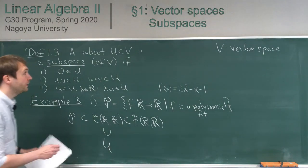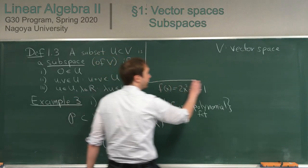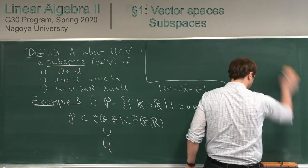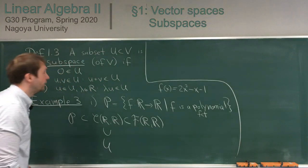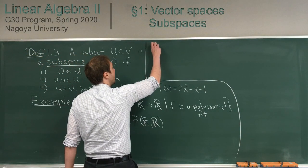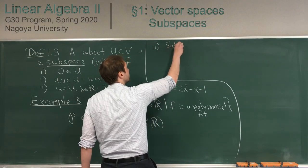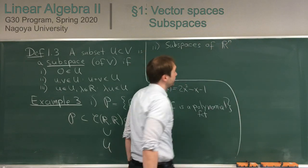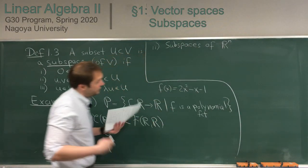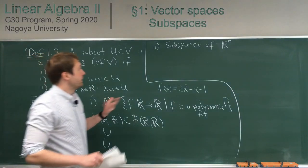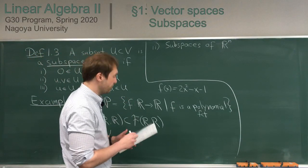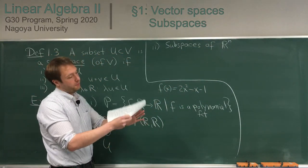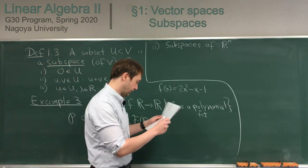The second example is everything we did in Linear Algebra 1: subspaces of Rn. If V is Rn, we had many ways to get subspaces — for example, the kernel or image of linear maps. If n is 3, the three-dimensional space, then planes through the origin or lines through the origin are subspaces.